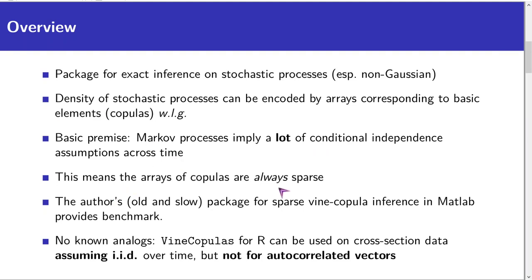Are there alternatives? Not that I know of. In fact, in my past job I have myself developed a MATLAB package based on the same principle of sparsity, which was rather slow. There is a package VineCopulas in R. However, it does not allow studying dynamic processes, only the cross-section correlation among variables.